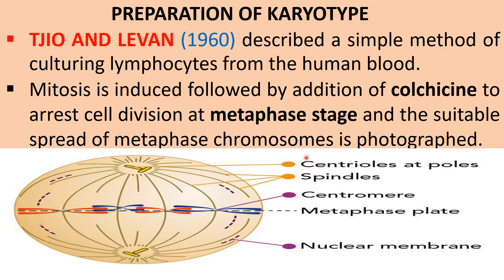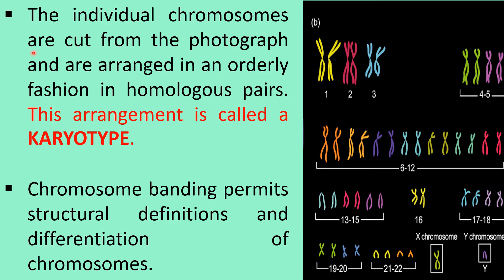At this stage the chromosomes are photographed. The individual chromosomes are cut from the photograph and arranged in an orderly fashion in homologous pairs — this arrangement is called the karyotype. The first chromosome of the father is paired with the first chromosome of the mother as a homologous pair, and likewise all homologous pairs are arranged sequentially.